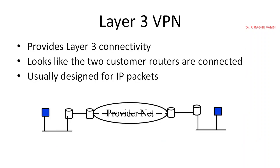Layer 3 VPN provides Layer 3 connectivity. Layer 3 means the network layer — at the IP level. The physical layer is Layer 1, data link is Layer 2, and the network layer is Layer 3. This VPN will be established at the network layer, IP level.